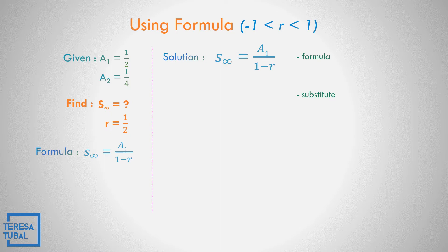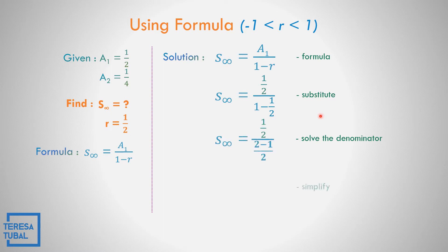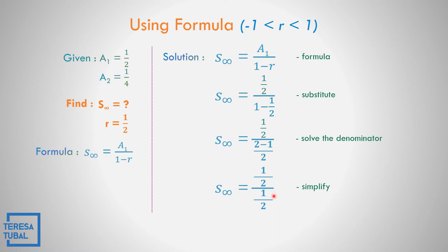Let us solve the infinite geometric series. Sum to infinity is equal to the first term all over 1 minus r. Let us substitute: the first term is equal to 1 half, copy 1 minus the common ratio 1 half. Solve the denominator — the LCD of 2 and 1 is 2. So 2 divided by 1 is 2 times 1, equals 2; and 2 divided by 2 is 1 times negative 1, equals negative 1. Simplify: copy numerator 1 half, and 2 minus 1 equals 1 all over 2. So 1 half divided by 1 half, the answer is equal to 1. The sum to infinity is equal to 1.